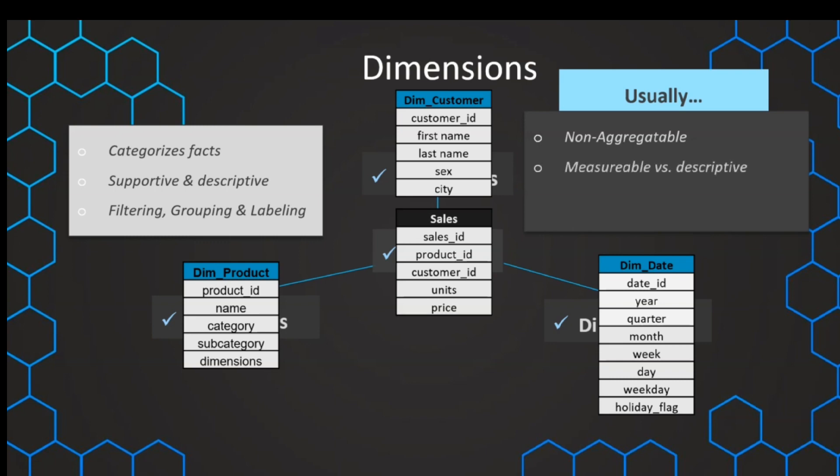Therefore, dimensions are non-aggregatable and their character is of descriptive nature, whereas in the fact we are measuring something. Also, while in a fact table we have some things moving or happening,